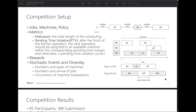The colored rectangles denote different operations, and the color indicates the type of machines that can process the corresponding operation. For instance, a type A job comprises three operations — A1, A2, and A3 — where A1 and A3 can be processed by one type of machine, while A2 needs another. A policy in DJSSP assigns specific jobs to an available machine at a specific point in time.